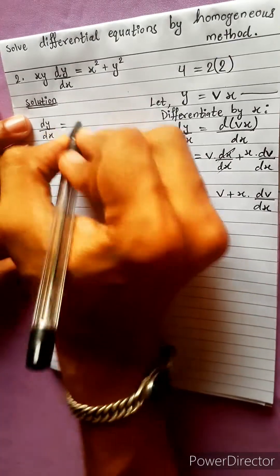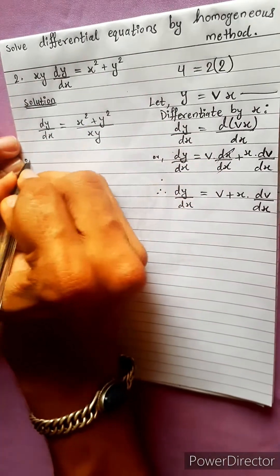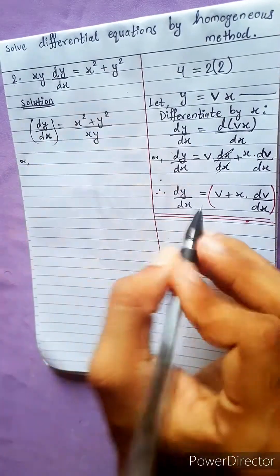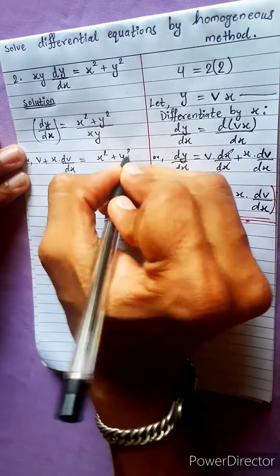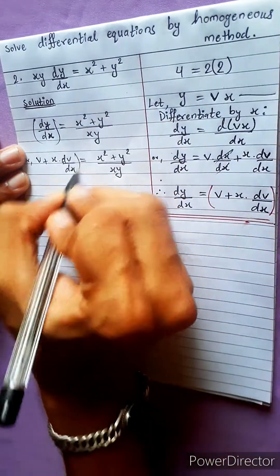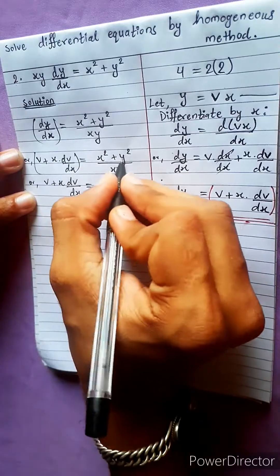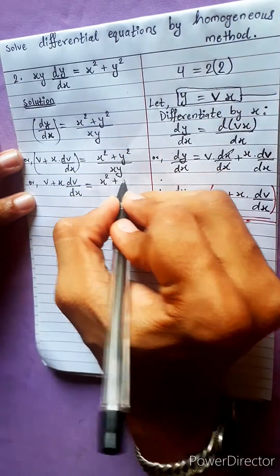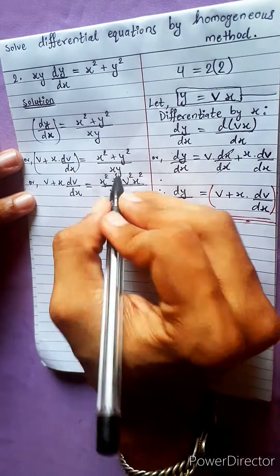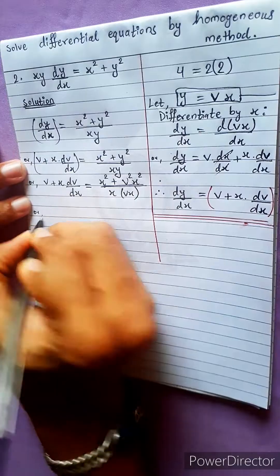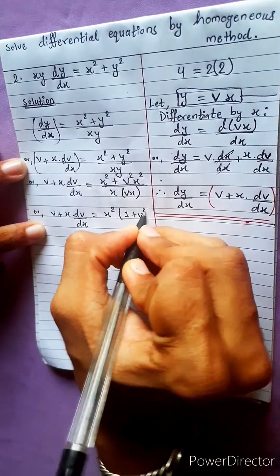dy by dx equals to x square plus y square divided by xy. We replace v plus x dv by dx equals to x square plus y square divided by xy. This equals to x square plus y square divided by dx equals to x square divided by dx.